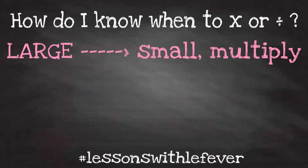For example, if I wanted to convert 19 liters into milliliters, first I would need to know that a liter is greater than a milliliter, so I should multiply. Then I would need to know that in one liter there are 1,000 milliliters. Remember, milli means one of 1,000. So 19 times 1,000 equals 19,000 milliliters.